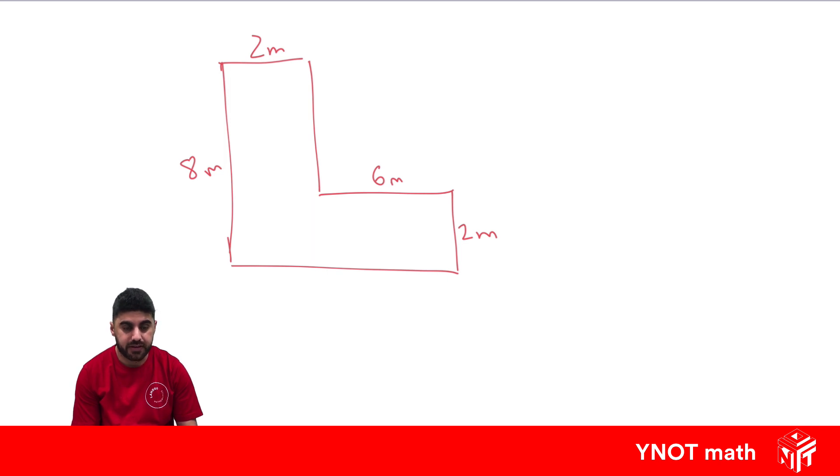Sometimes all the lengths are given around the outside. You can see that this length here we don't know and this length here we don't know, but there's always enough information given where we can work out those lengths. Let's see how we can do that.